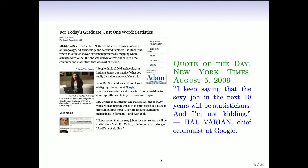Google is a big user of data and a big analyzer of data. Here's a quote that came in the New York Times in 2009 from Hal Varian, who's the chief economist at Google. You can see the quote there — keep saying that the sexy job in the next 10 years will be statisticians. And indeed, there's a picture of Carrie Grimes, who was a graduate from Stanford statistics. She was one of the first statisticians hired at Google. Now Google has many statisticians.